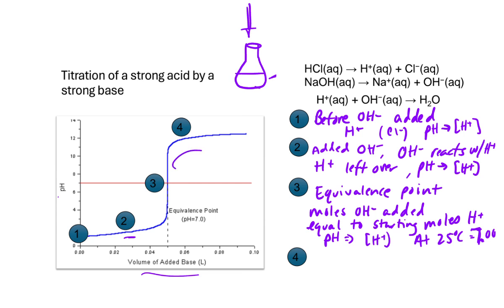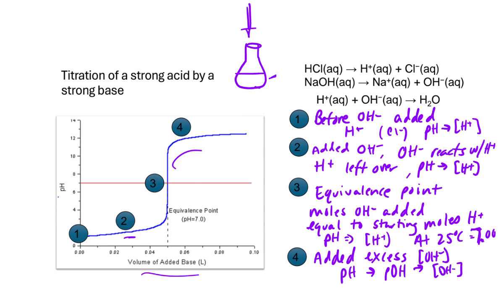Past the equivalence point, anywhere past point three, we have now added excess hydroxide. The main component affecting pH is the concentration of hydroxide. So we can get pH by initially calculating the pOH, since that depends more directly on the hydroxide ion concentration — it's an easier way to get the pH. At point four, we have excess hydroxide and need to determine how much is in excess, then calculate pH.